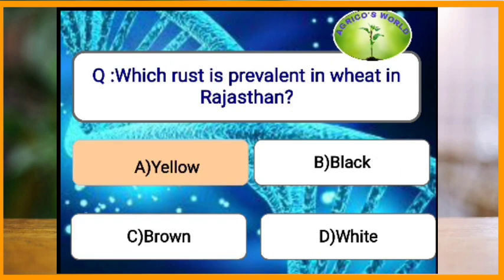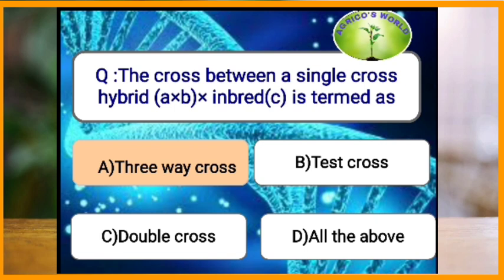Which rust is prevalent in wheat in Rajasthan? In Rajasthan, the rust which is prevalent is yellow rust or stripe rust, which is caused by Puccinia striiformis.